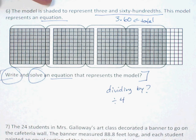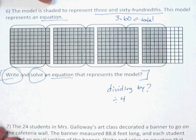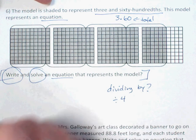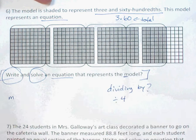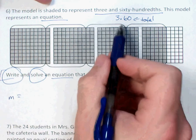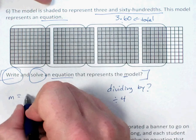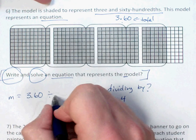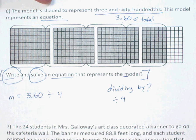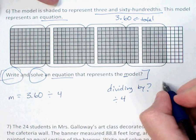It doesn't matter what variable I pick. I'll use M for model. So M = 3.60 ÷ 4. Now I'll solve it. Move the decimal up first. Four won't go into 3, so put a 0. Four goes into 36 nine times — nine times four is 36, no remainder.